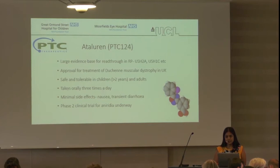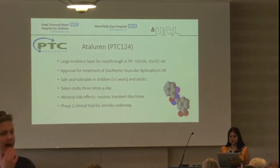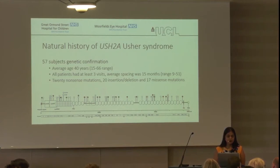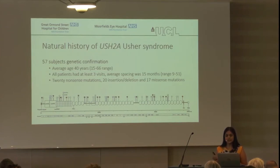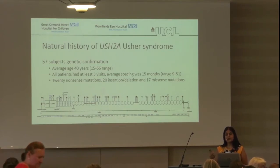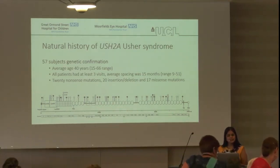We want to apply this drug to Usher's, and in order to do that in a clinical trial setting, we need to know what the outcome measures would be to monitor a response to treatment. We started a natural history study of our patients with USH2A at Moorfields. We selected 57 patients that had, on average, three clinical visits one year apart. Of those 57, a third had nonsense mutations — which reflects our cohort generally, as 30% of USH2A cases are due to nonsense mutations — a third were insertions and deletions, and 17 were missense mutations. The average age was 40 years, ranging from 15 to 66.